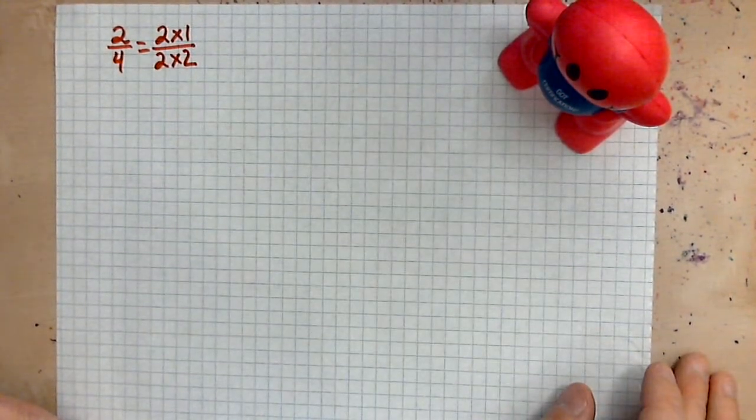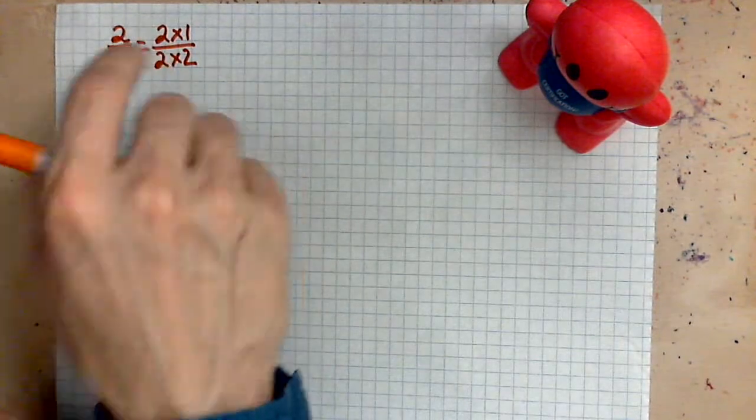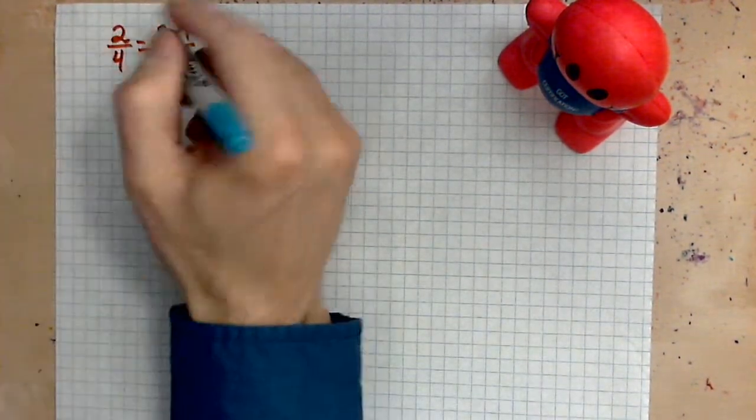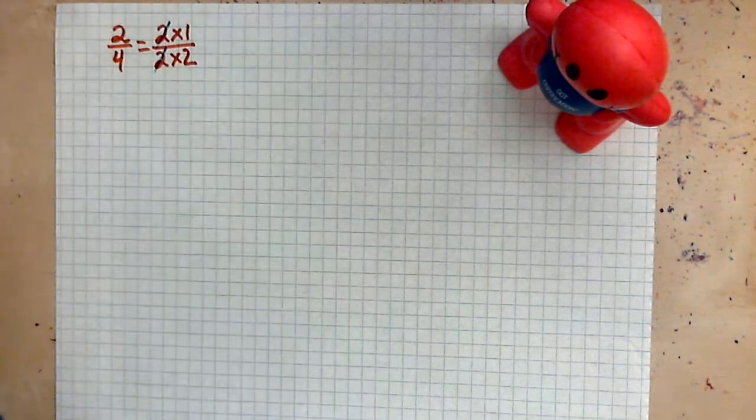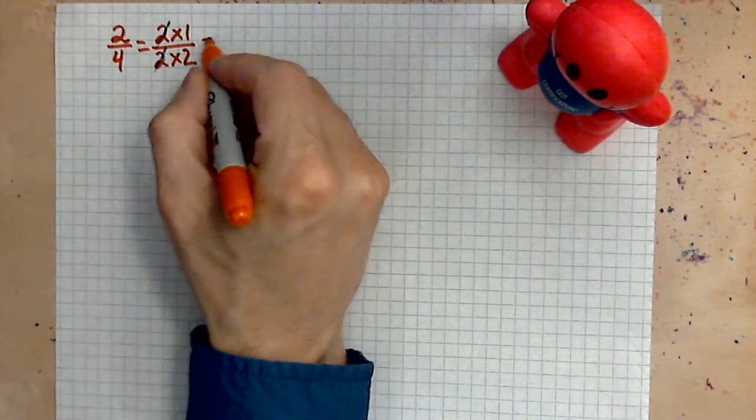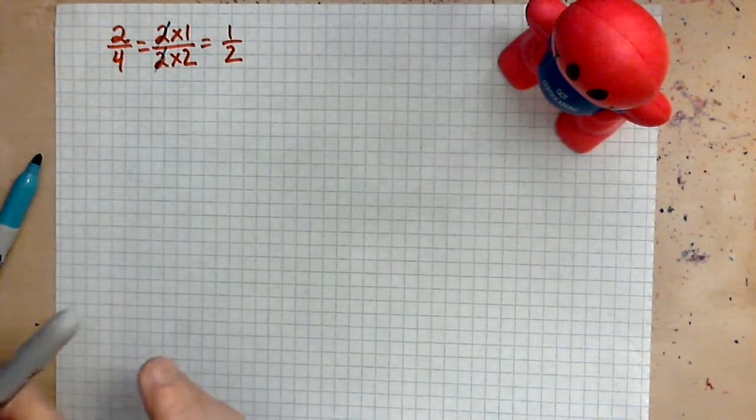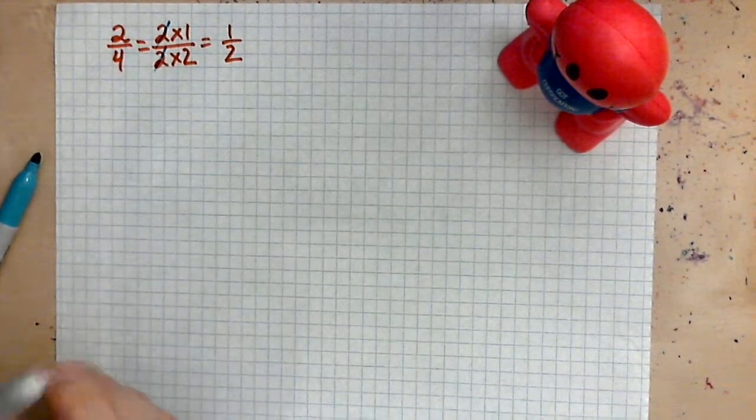And by taking a step, what we observe is now that the 2's can be cancelled. So we'll do that with a different color. And all that remains is 1 over 2. So we have reduced the fraction from 2 out of 4 to 1 out of 2.